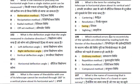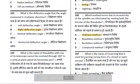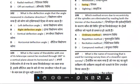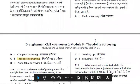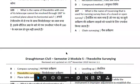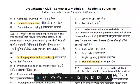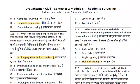Which method eliminates the error due to eccentricity of the spindle? It is eliminated by reading both verniers — that is the ordinary method. What is the name of the traverse used for running survey lines in a closed or open survey? The method of prolonging a straight line results in cumulative error if the instrument is not in adjustment.